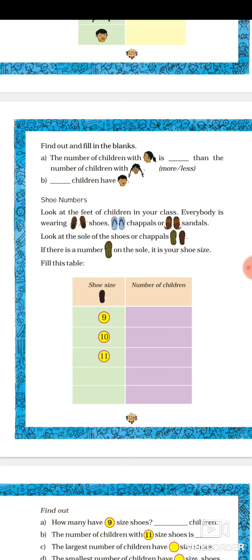Then shoe numbers. Look at the feet of children in your class — everybody is wearing shoes, chappals, or sandals. Look at the sole of the shoes or chappals. If there is a number on the sole, it is your shoe size. Fill the table with shoe sizes 9, 10, and 11, and write how many children are wearing each size. There are two vacant boxes where you can write any other sizes you find.